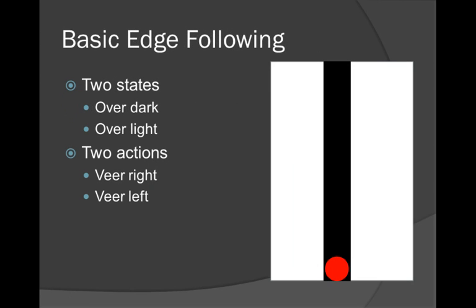So now a bit more in-depth approach to this edge following method. You're going to basically have two states. Your light sensor can be over a dark color or over a light color, and it's going to have two actions, veer towards the right or veer towards the left. So in this case, it's over dark, so it's going to veer towards the left. Now it's over light, it's going to veer towards the right.